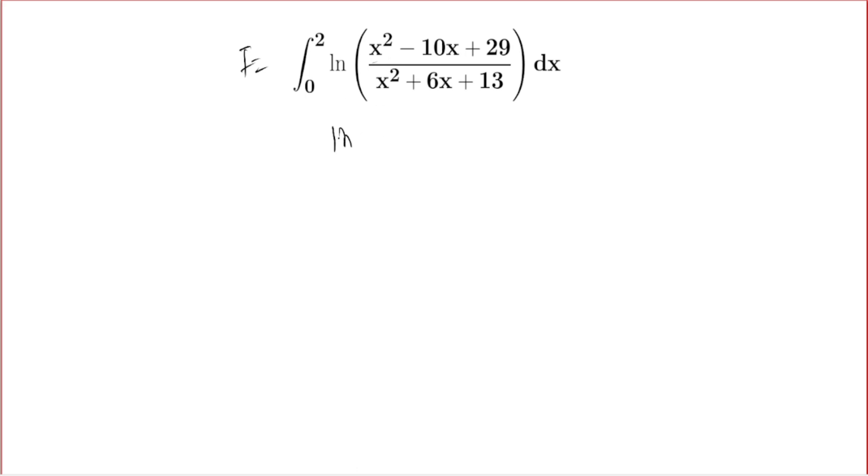If we look at this function, it's in the form ln(a/b). I can write this as ln(a) - ln(b), then apply integration by parts and simplify. But in this problem, there's a little trick because the limit and function are set in a specific way. I'll show you how to observe this trick.